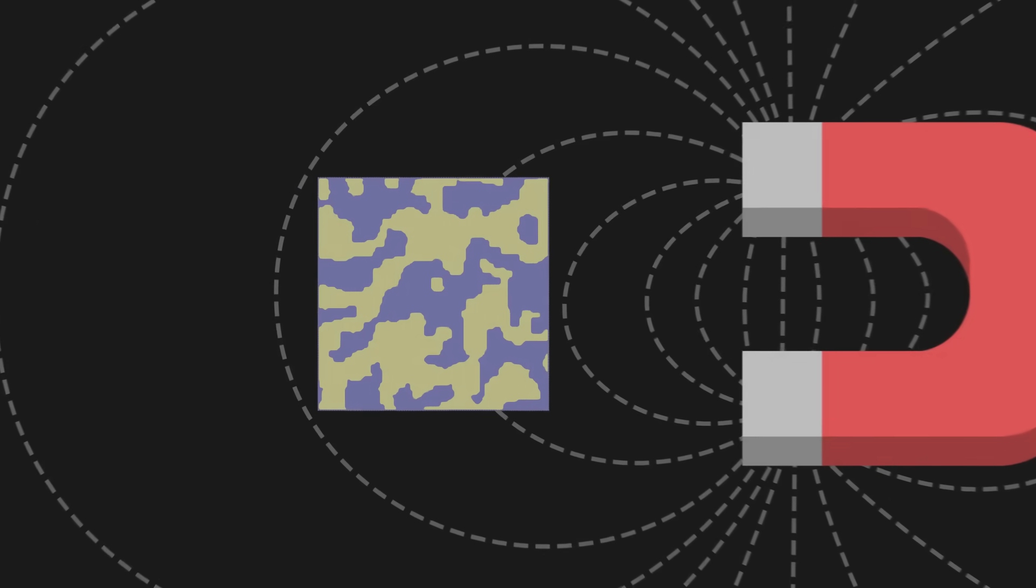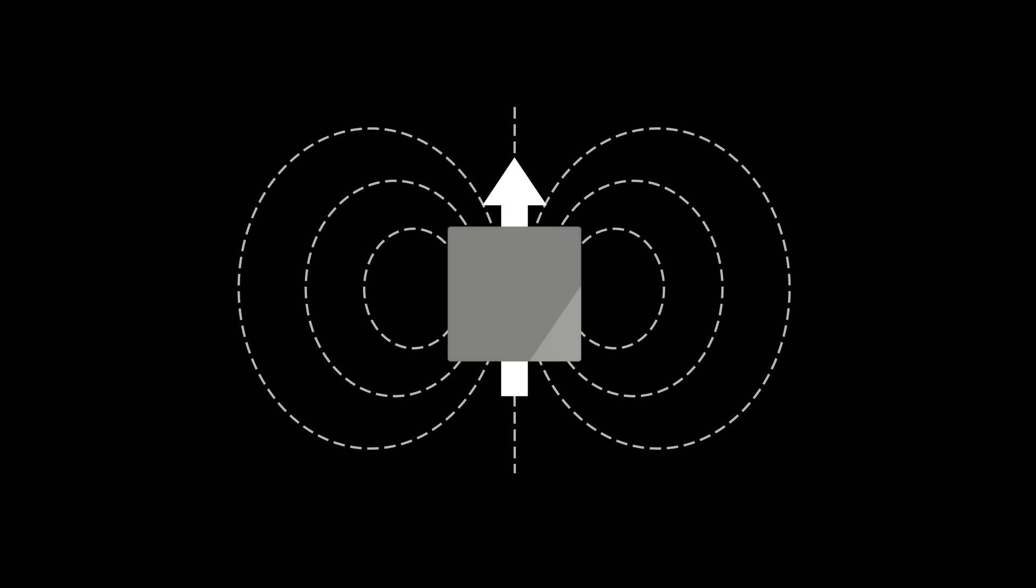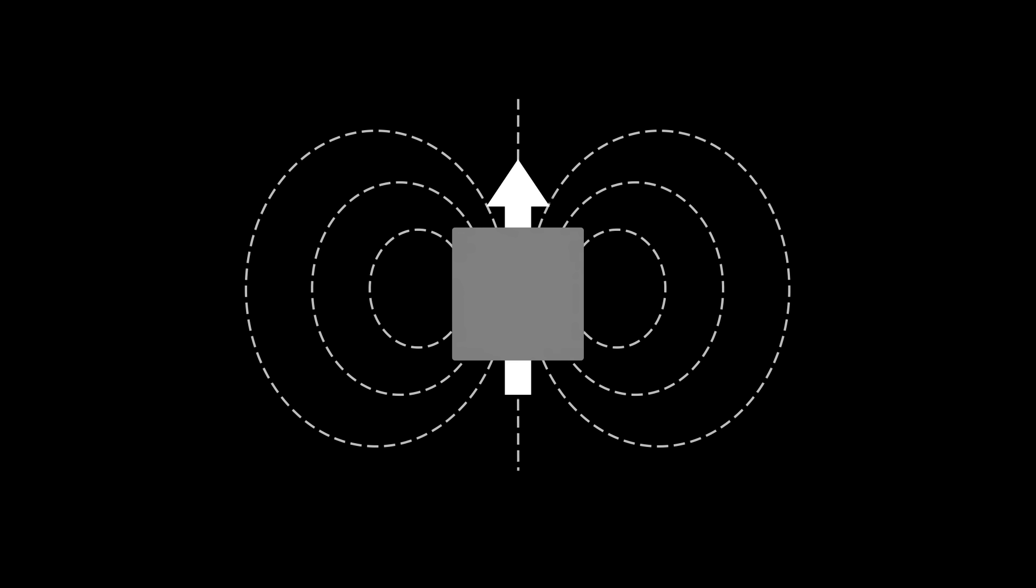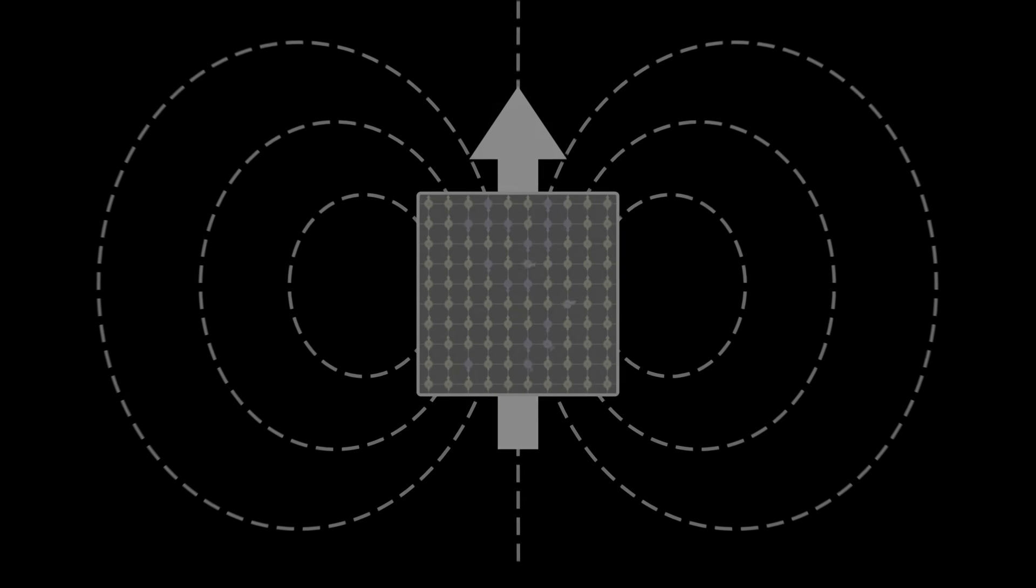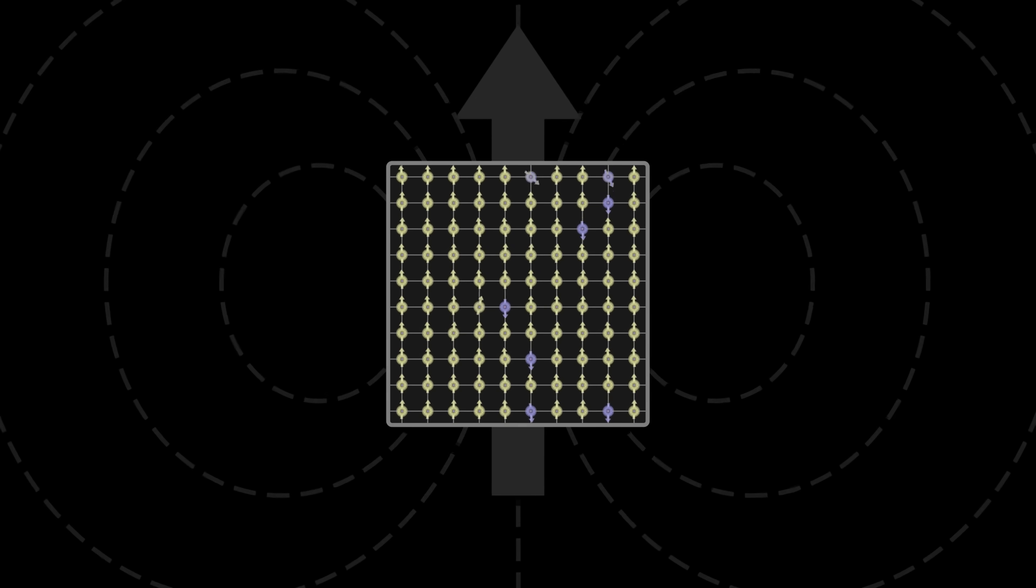Finally, if we add an external magnetic field, all the spins tend to align with this field, transforming the iron block into a large scale magnet. The Ising model thus makes it possible to grasp certain phenomena such as ferromagnetism.